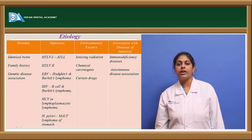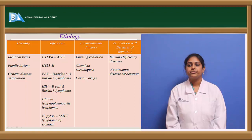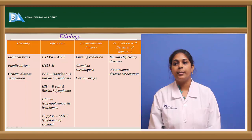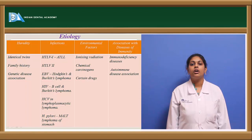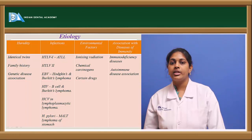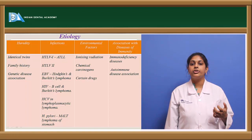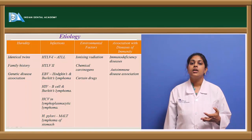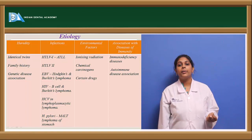HIV is associated with B cell lymphomas and Burkitt's lymphoma. Hepatitis C virus is involved in lymphoplasmacytic lymphoma, and Helicobacter pylori is associated with mucosa-associated lymphoid tissue lymphoma of the stomach. Environmental factors such as ionizing radiation damage differentiating cells in the bone marrow, resulting in mutated cells carried to subsequent generations. Chemical carcinogens such as smoke, pollution, tobacco, and alcoholism also play a role.